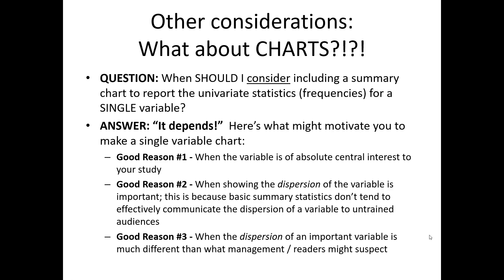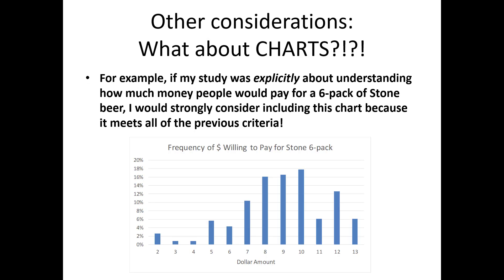The third reason is related to the second. If the dispersion of an important variable is very different than what management or readers might suspect it is, we probably want to show that dispersion to them. Let me give you an example from our craft beer data set to motivate a situation where we might want to show a chart for a univariate statistic analysis.